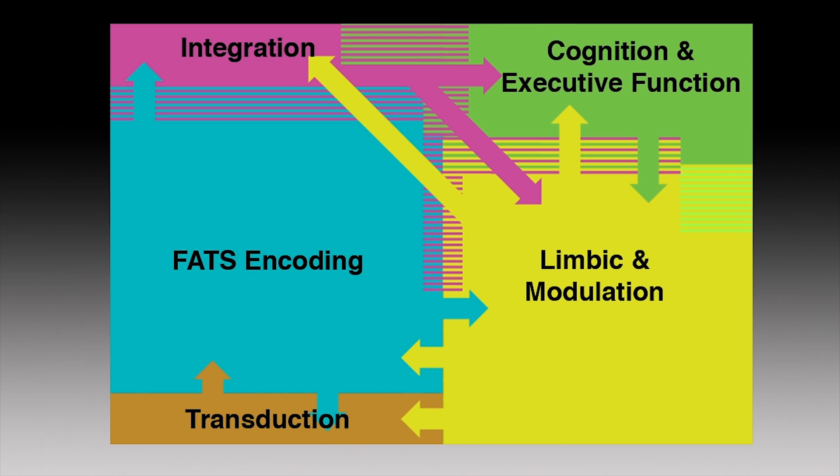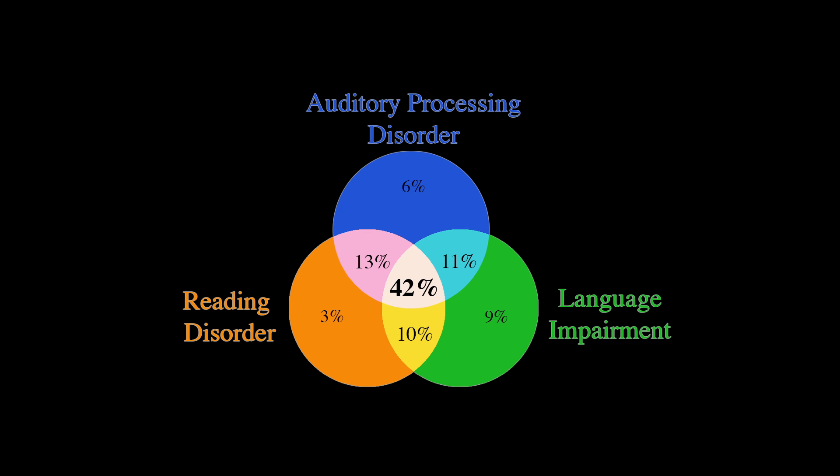For example, if we can identify where in the auditory network an impairment is occurring, then treatment can be targeted at that impaired process. One example of this application is the diagnosis and treatment of child language learning problems. In 2007, Muradula Sharma and her colleagues in Sydney showed that over 75% of children with language learning problems could be clinically diagnosed with more than one impairment, depending on which clinical battery was used for the assessment. So if we can identify specific brain processes that underlie each of these behavioral impairments, then we can improve differential diagnosis and targeted treatment for this population of children.